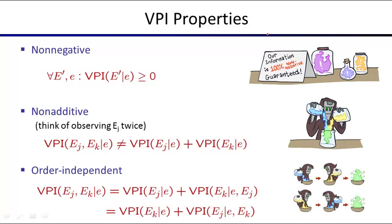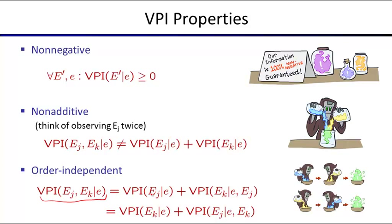This property always holds: it doesn't matter in which order you measure — whether you first get sensor k then j, or the other way around, is the same. VPI(Ej, Ek) = VPI(Ej) + VPI(Ek | Ej) = VPI(Ek) + VPI(Ej | Ek). This means the value of getting both is the value of getting Ej plus the additional value of getting Ek after already having Ej, or vice versa.